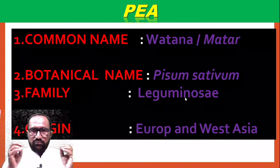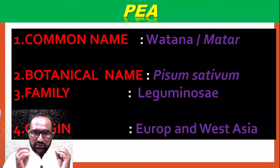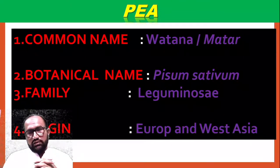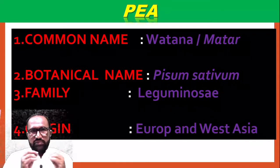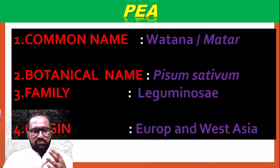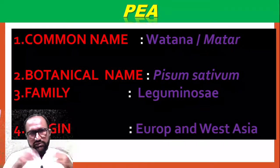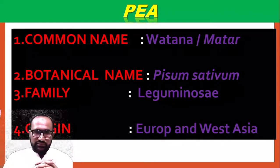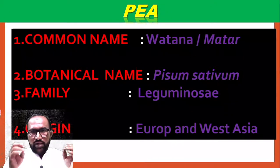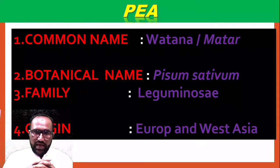The family is Leguminosae. Pulse crops which belong to Leguminosae family include: red gram, black gram, green gram, gram, pea, and lentil - all belong to the Leguminosae family. The origin of pea crop is Europe and West Asia.